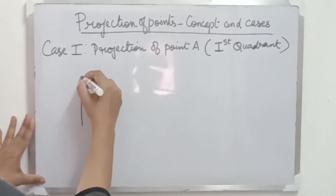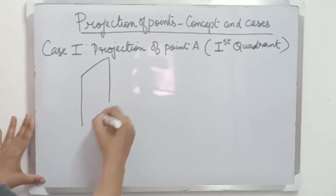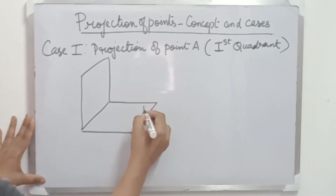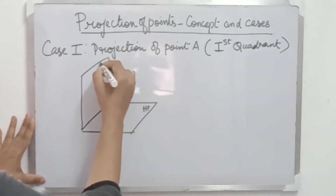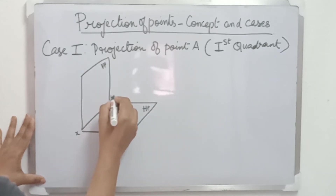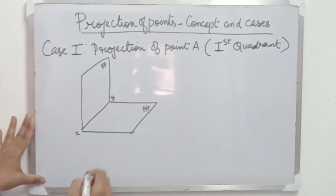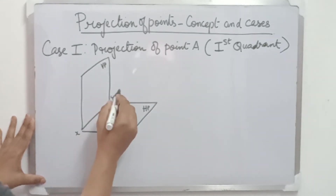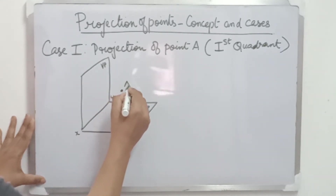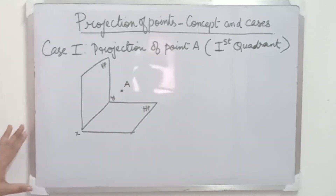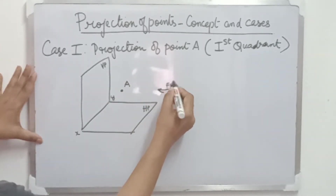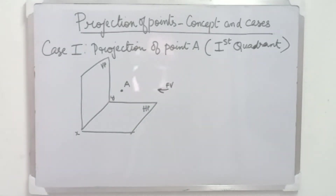Let me draw the pictorial view of the first quadrant, where this is the HP and this is the vertical plane, and I have marked the XY line also. Our point A is lying in the first quadrant.